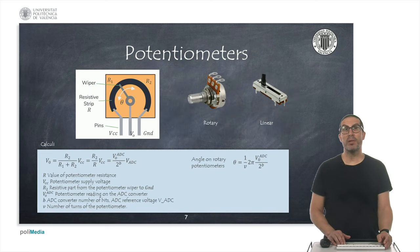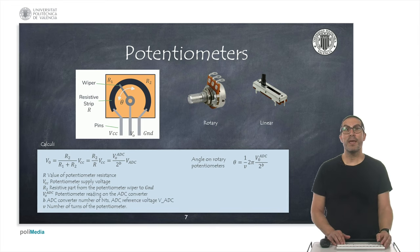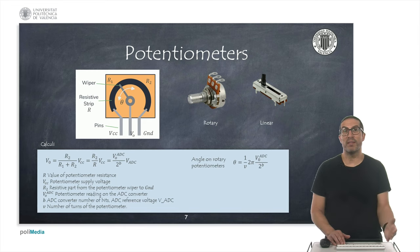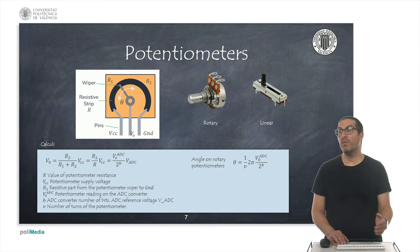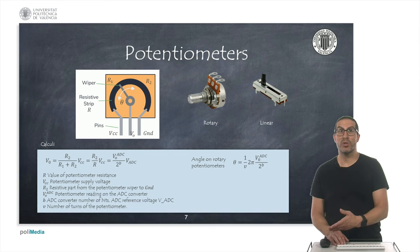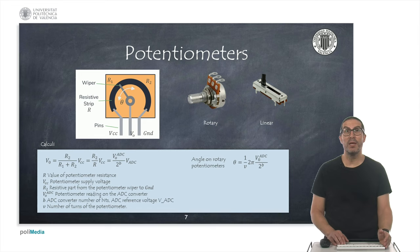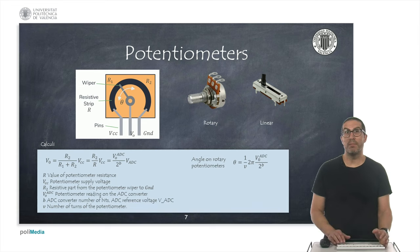A potentiometer is a simple device that can be used to measure rotation of an axis or linear displacement. The output signal depends on the position of a wiper, acting as a resistive voltage divider. A microcontroller can read this signal; its value V_ADC depends on the resolution of the analog converter in bits and the reference voltage of the analog converter, V_ADC_ref. With this value we can make simple computations to determine the position of the axis.